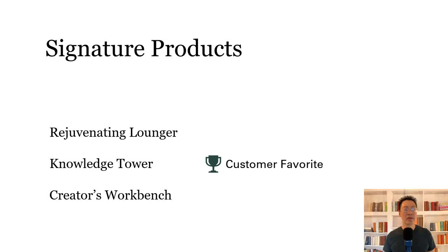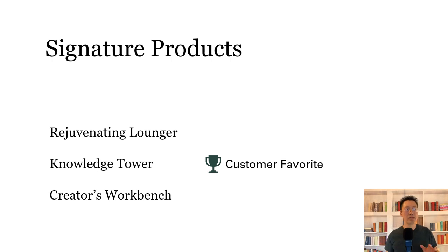Let's listen to the screen reader read a slide: 'Rejuvenating lounger. Knowledge tower. Creator's workbench. Trophy with solid fill — image. Customer favorite.' The phrase 'customer favorite' is confusing — it's unclear whether it refers to the last product or all three. What happened is that 'customer favorite' is a separate object positioned to visually line up with one product name, but that positional relationship doesn't come through in the screen reader.